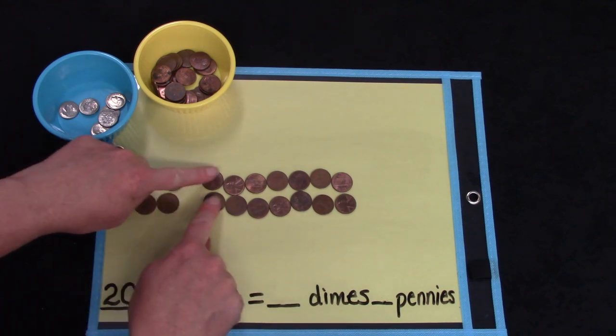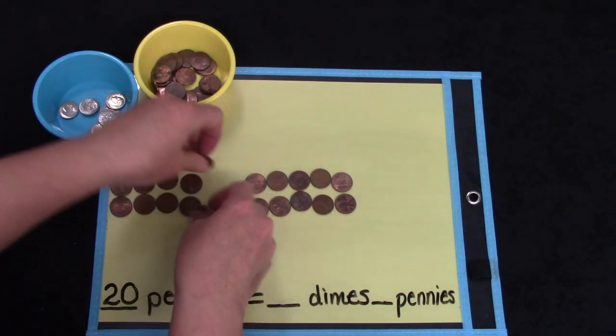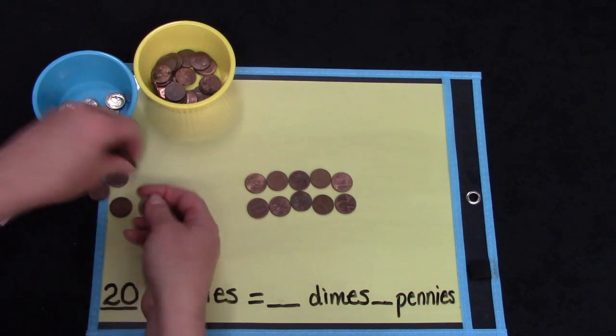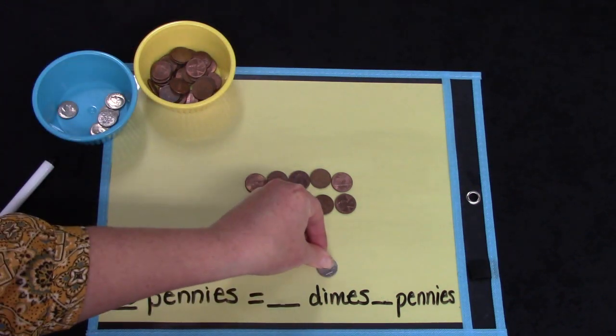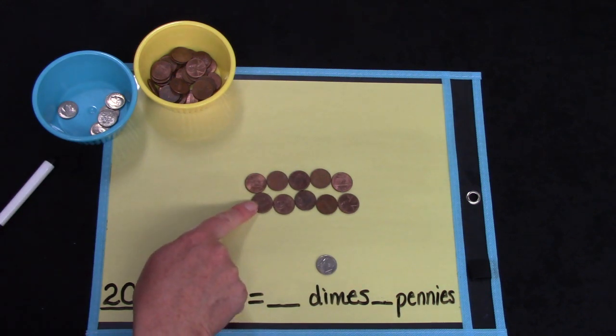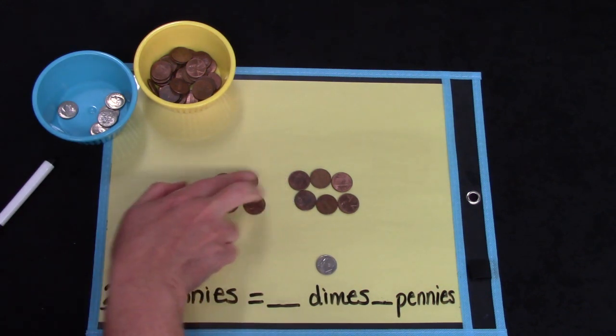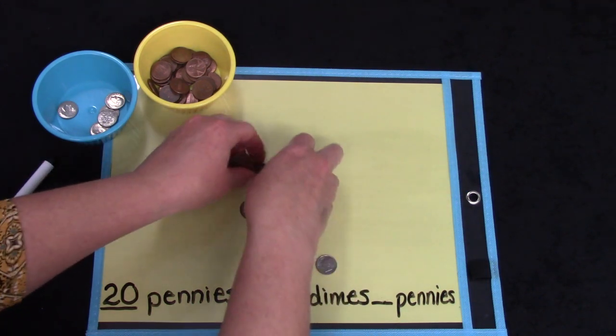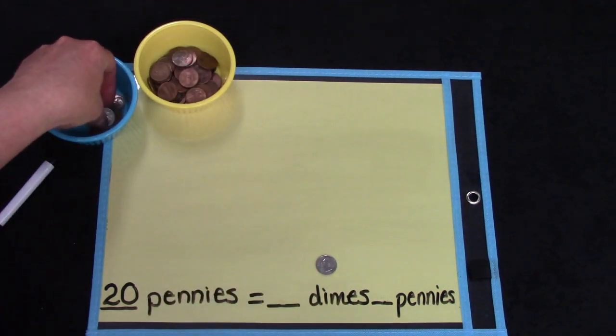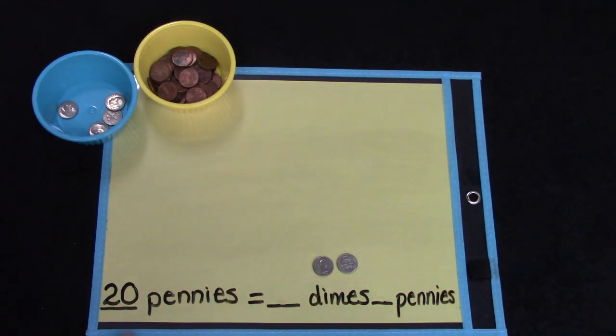2, 4, 6, 8, 10. Well, I can trade this group of 10 for a dime. Do I have enough to trade again? 2, 4, 6, 8, 10. I do. I'm going to trade these pennies for a dime.